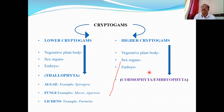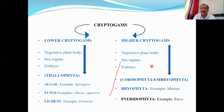Higher cryptogamae, where the plant body is differentiated, are called Cormophyta — as opposed to Thallophyta — or also Embryophyta, because the embryo stage is always present in their life cycle. Higher cryptogamae are of two types: Bryophyta, whose common examples are mosses, and Pteridophyta, whose common examples are ferns.